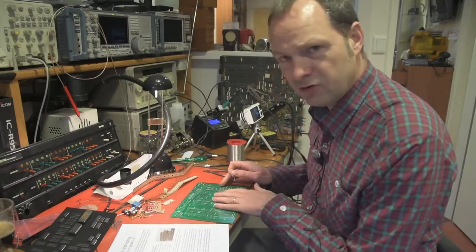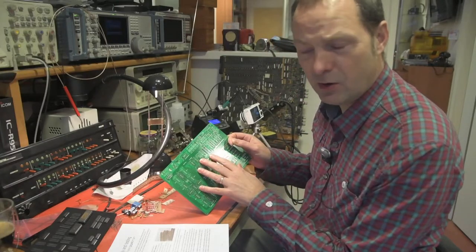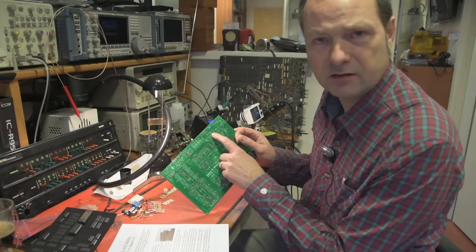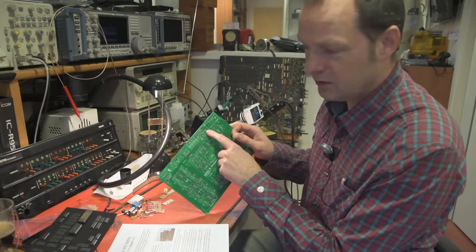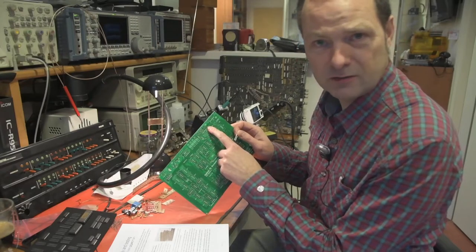All the components on the boards are labeled when possible with the value of the components. So for instance for the resistor over here it says 1k so we know it's a 1 kilo ohm resistor but also it has a number like R2 which is resistor 2 and the capacitors are marked with a C.